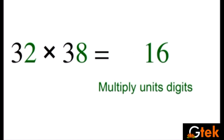So 8 into 2 is 16. My tenth place is 3, so 3 into 3 plus 1, I have to take. So it is 4. 3 into 4 is 12. So 1216.